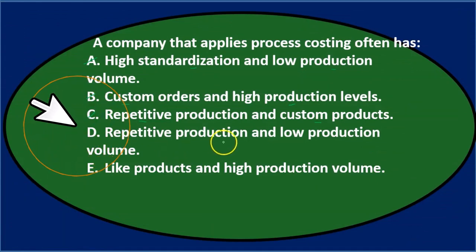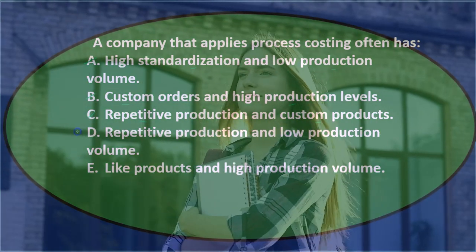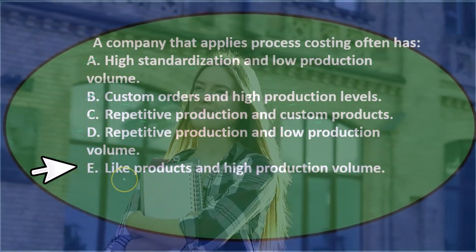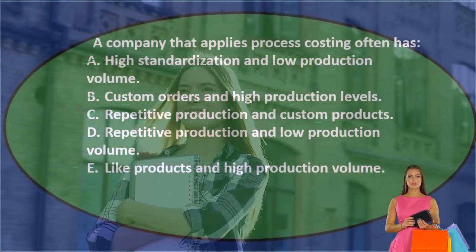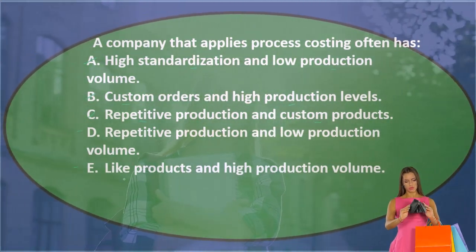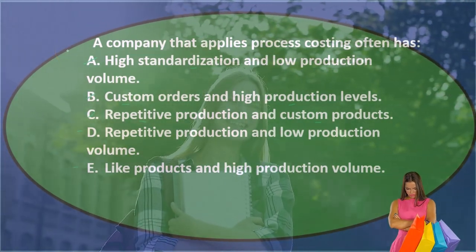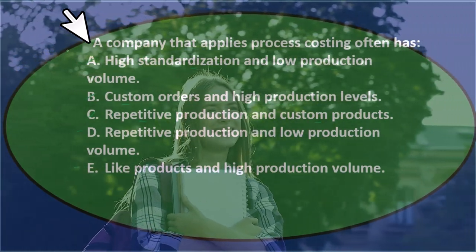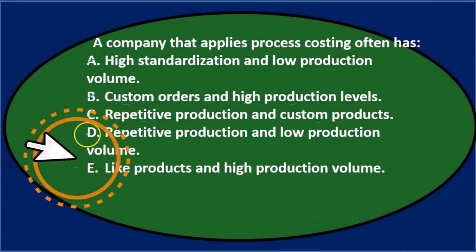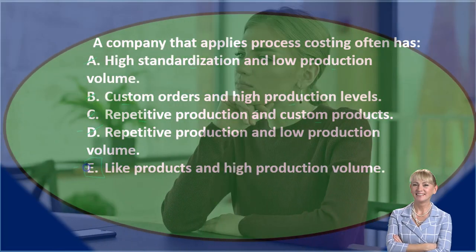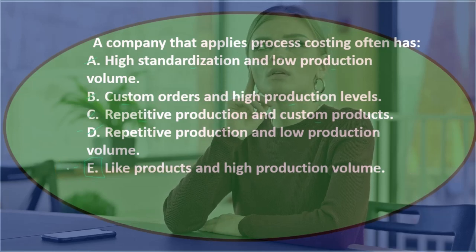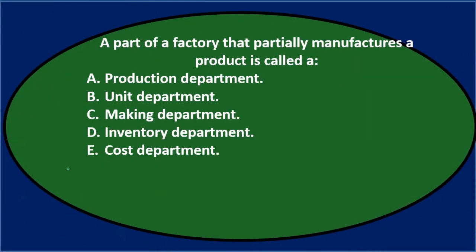Option D: repetitive production and low production volume — repetitive sounds good, but low production volume doesn't fit. Option E: like products and high production volume — like products meaning they're all the same, and high production volume. That describes a process cost system perfectly. Final answer: a company that applies process costing often has E) like products and high production volume.